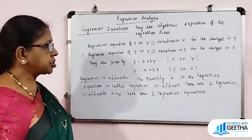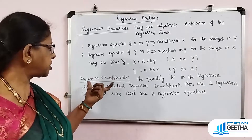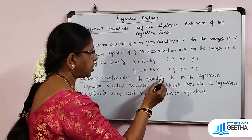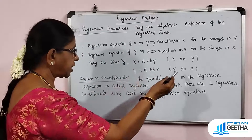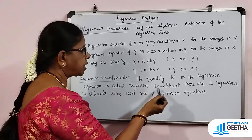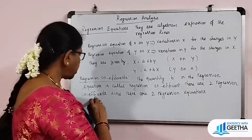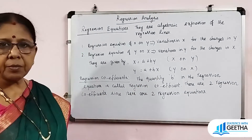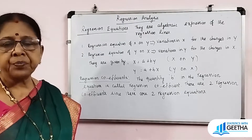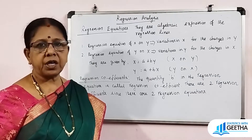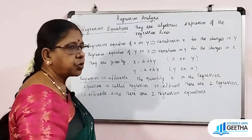In the two regression equations, we have two regression coefficients. In each equation, the quantity b — that is, the slope of the line — is called the regression coefficient. There will be two regression coefficients: one is the regression coefficient of x on y, and the other is the regression coefficient of y on x.